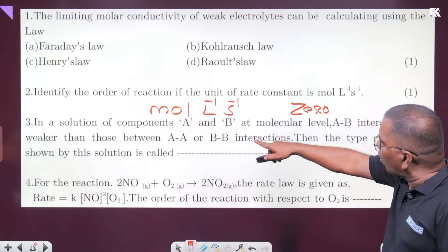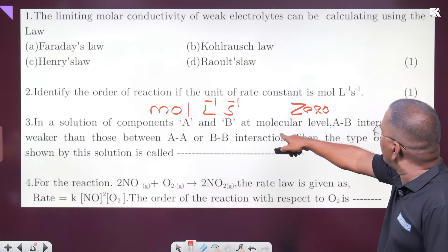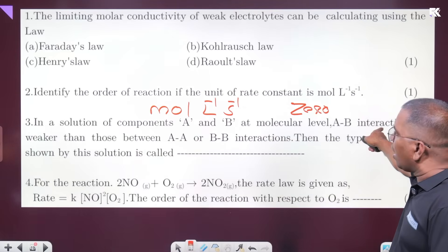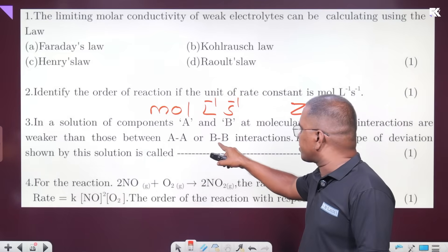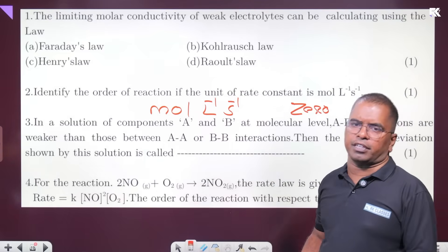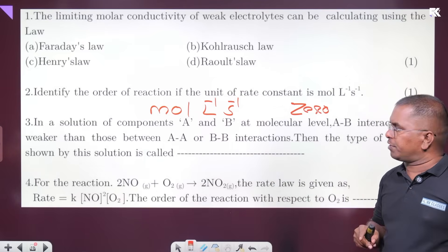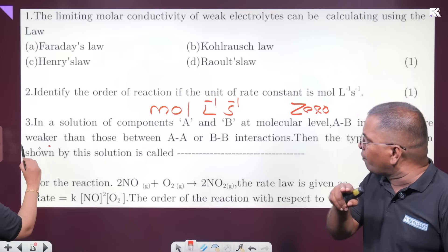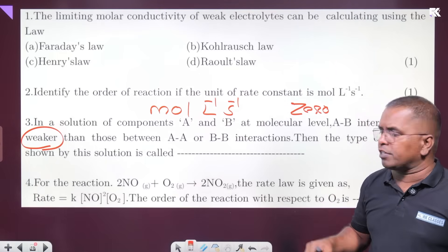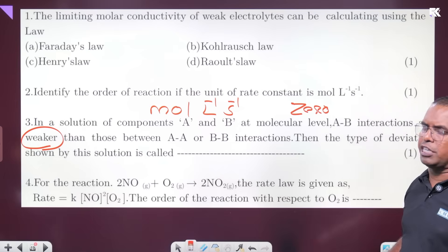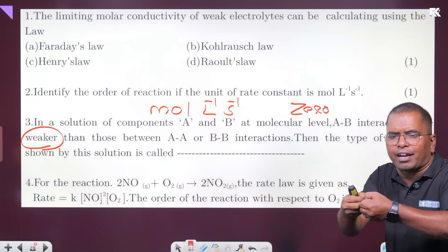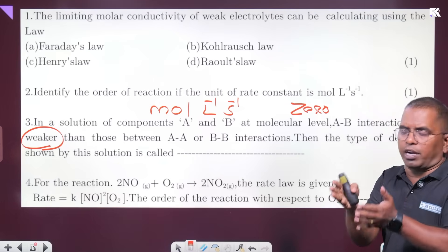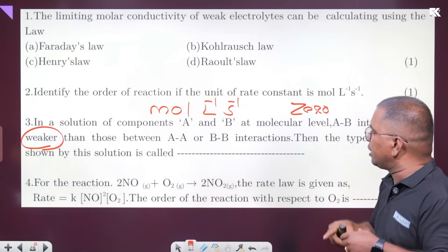In a solution, components A and B have A-B molecular interactions weaker than A-A and B-B interactions. Solvent-solute interaction is less than solvent-solvent and solute-solute interaction. This leads to positive deviation from Raoult's law.